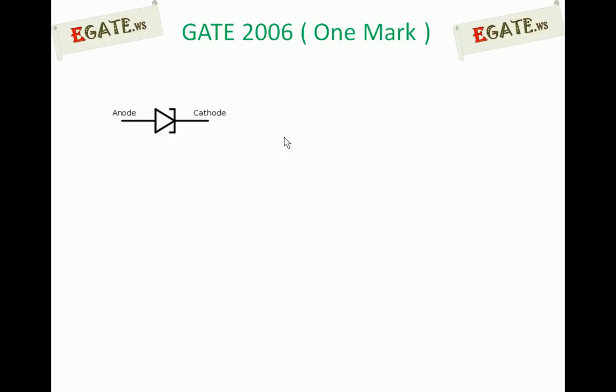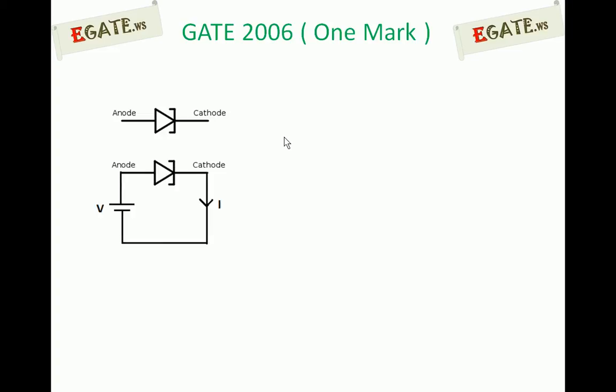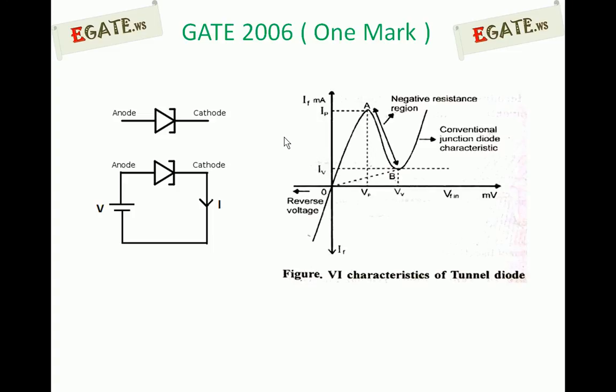We will see the details now. This is the symbol of the tunnel diode. I is the current flowing through the diode and V is the voltage across the diode. As you increase V positively and negatively, what is the value of current? Normally, the operation of the tunnel diode is specified with its IV characteristics, which are shown like this.